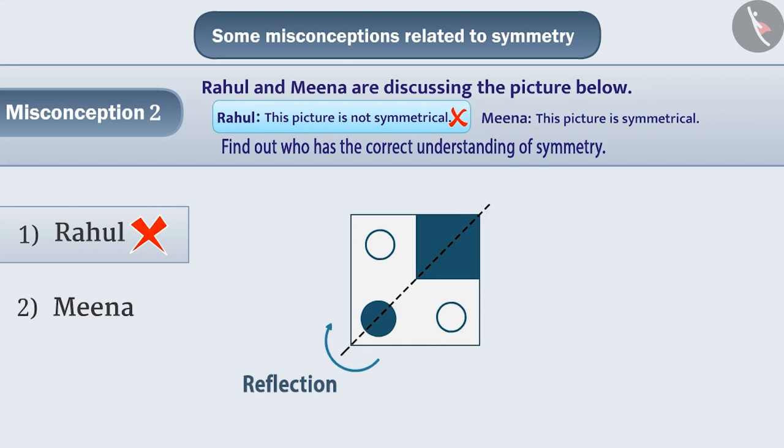Like if this shape is divided into two parts from this direction, then we will get two such parts which are reflections of or identical parts of each other. Hence, it is a symmetric shape.